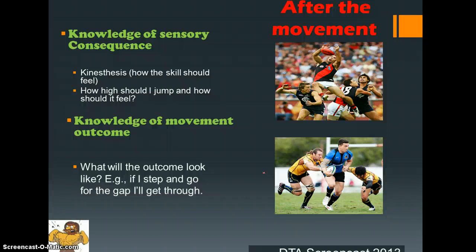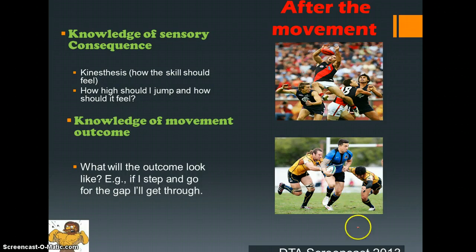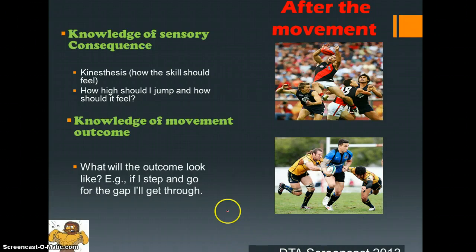What this allows us to do is develop and adapt the schema we have for that particular situation. By knowing what it feels like we can store that away, and by knowing what the outcome should be — and that we actually achieved it, such as breaking through the gap — we are able to adapt the schema for that particular motor program or generalized movement. That in essence gives us our new schema to move forward with our motor programs.